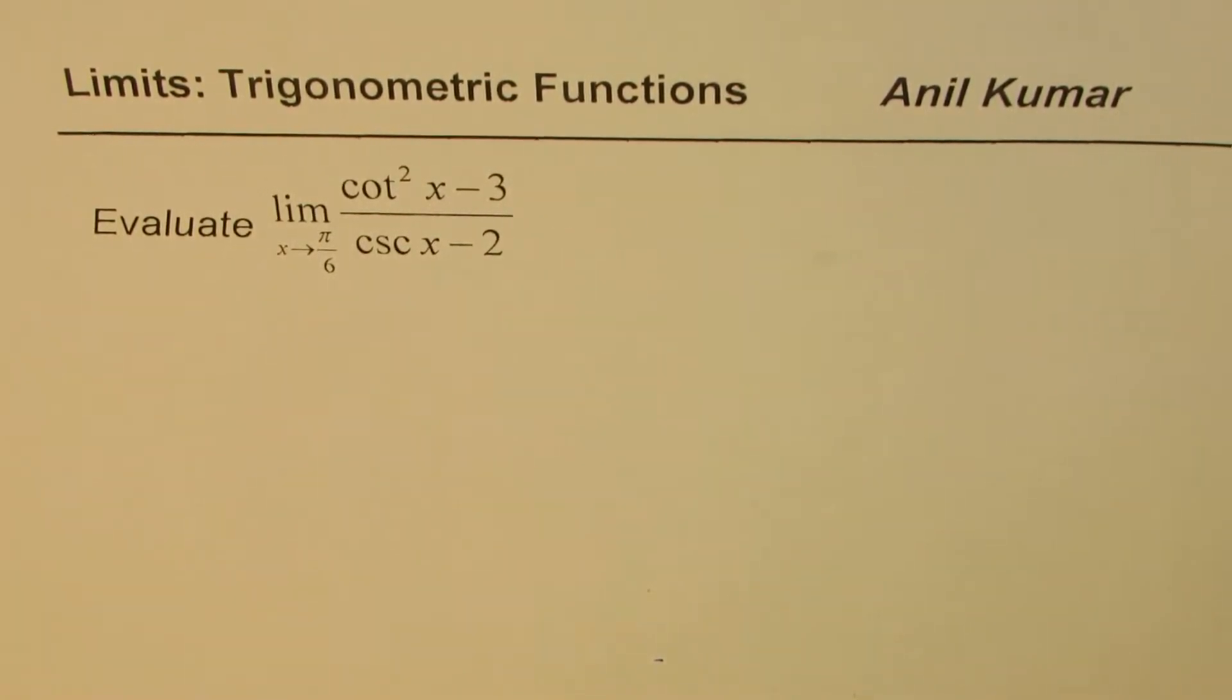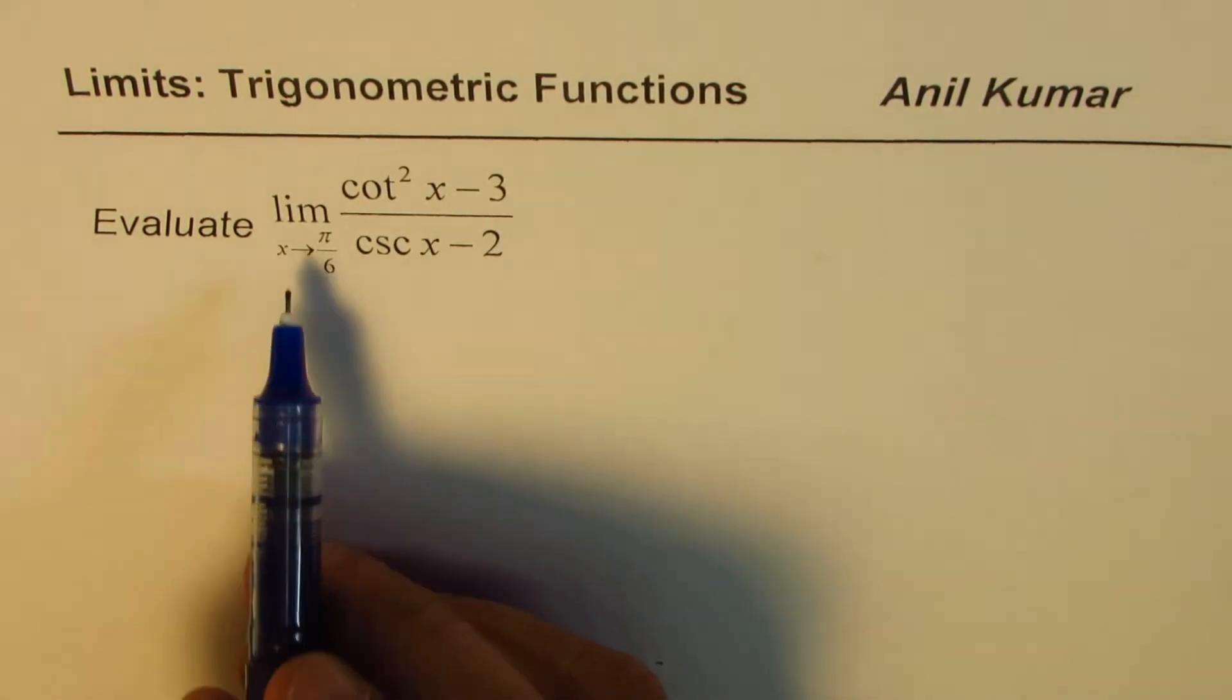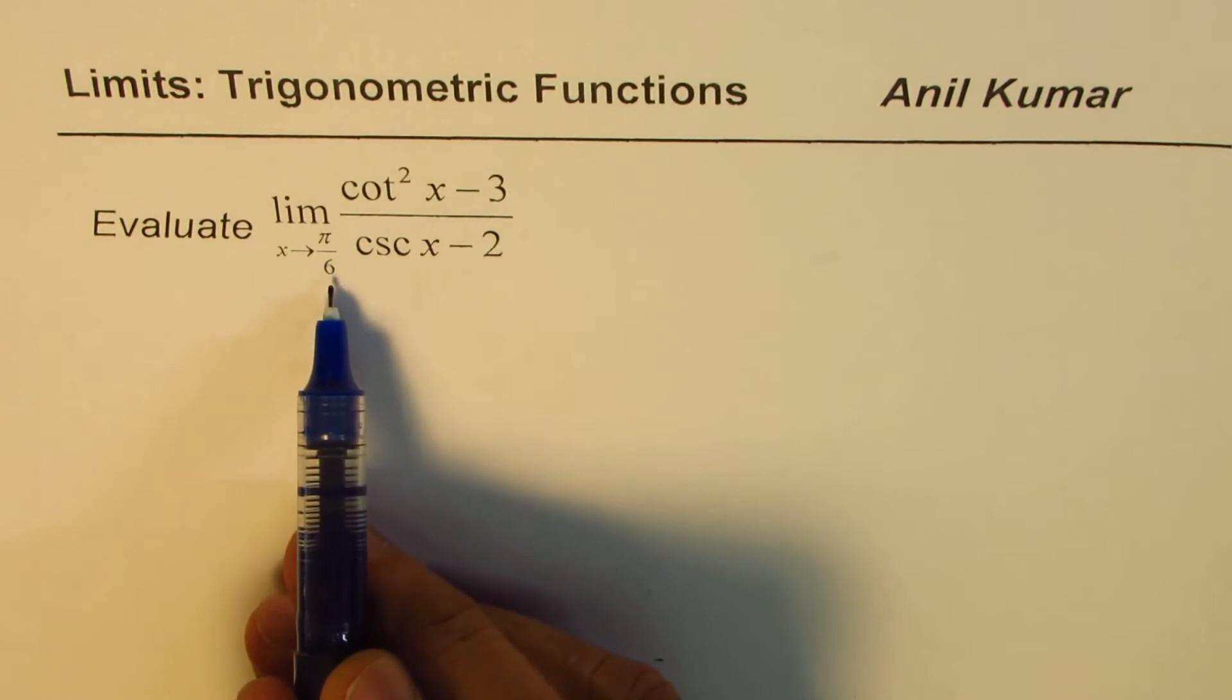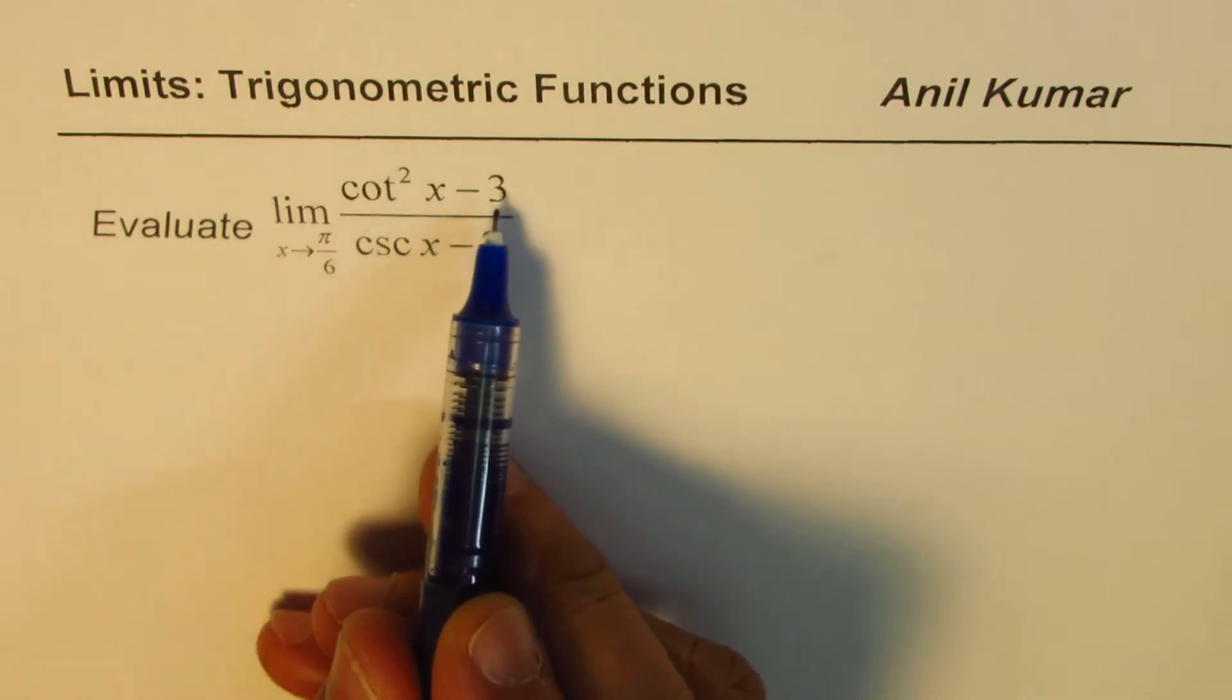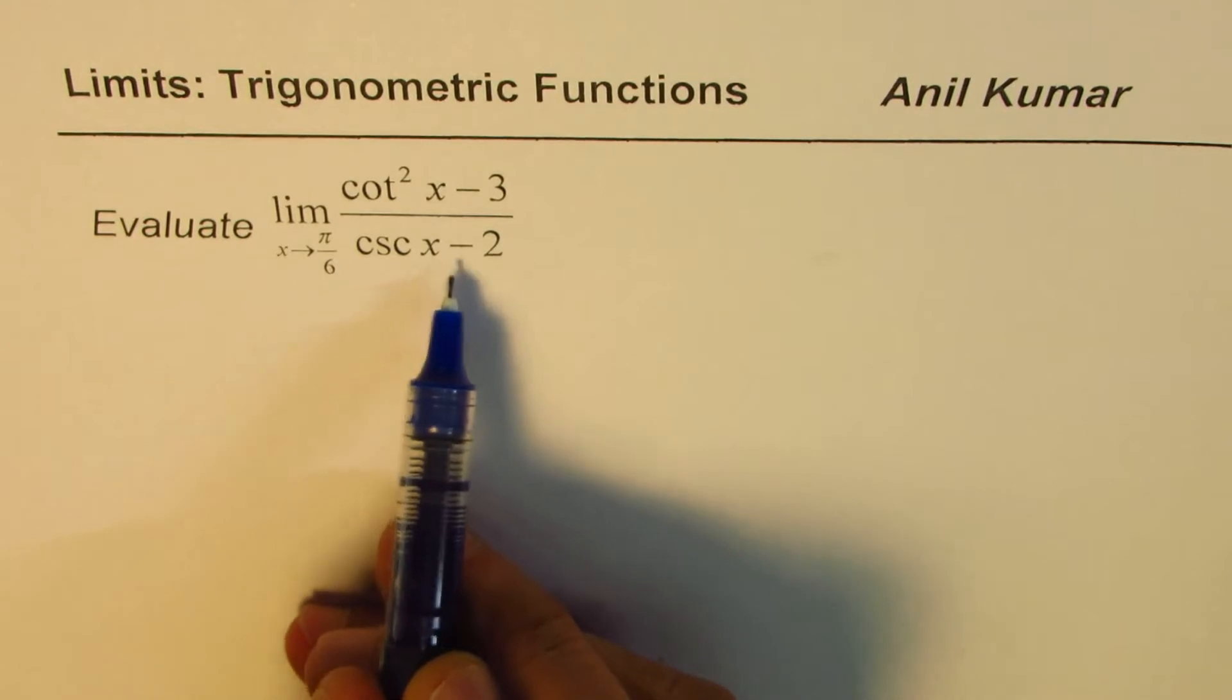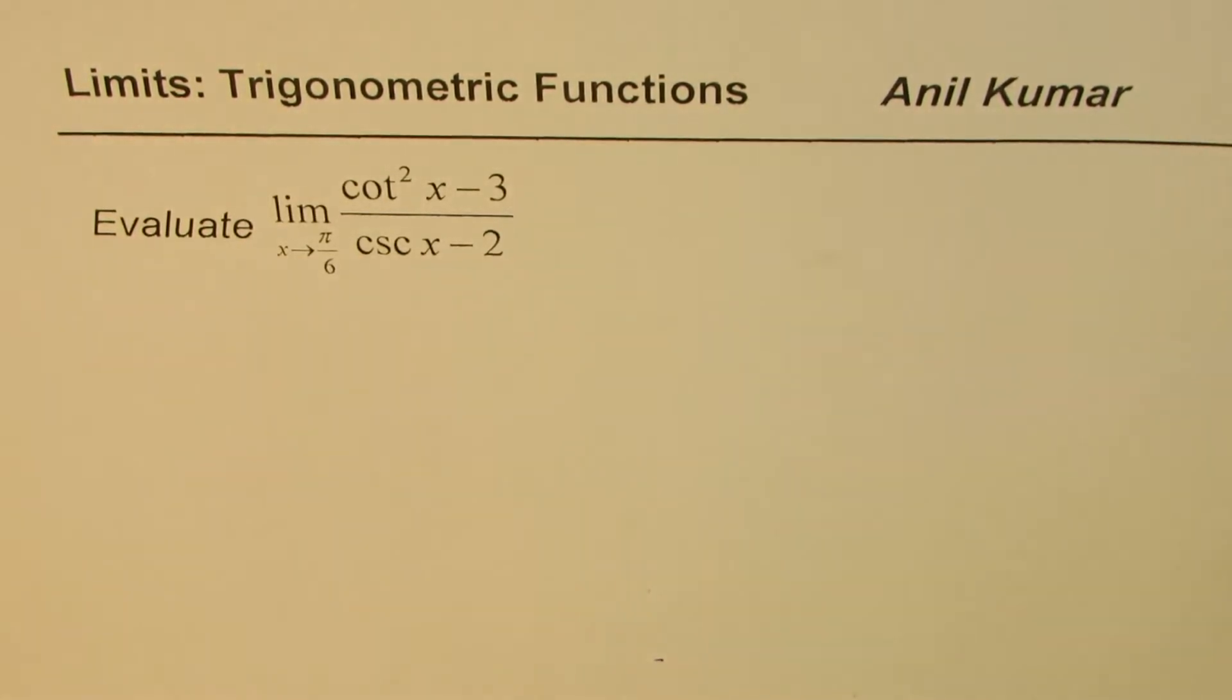I'm Anil Kumar sharing with you test questions on limits of trigonometric functions. You need to evaluate limit as x approaches π/6 for cot²x - 3 divided by csc x - 2. You can always pause the video, answer the question, and then look into my suggestions.